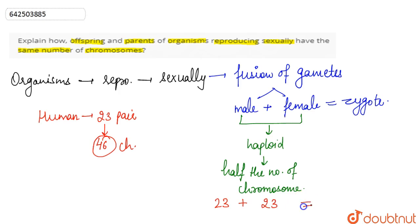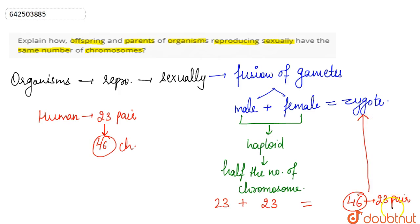When those 23 chromosomes of the male gamete and the 23 chromosomes of the female gamete fuse, they form 46 chromosomes — that is, 23 pairs. So we can see that the zygote has 23 pairs of chromosomes, meaning the zygote is diploid in nature and consists of the complete, normal chromosome number.